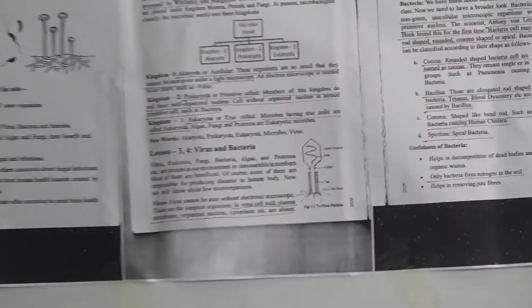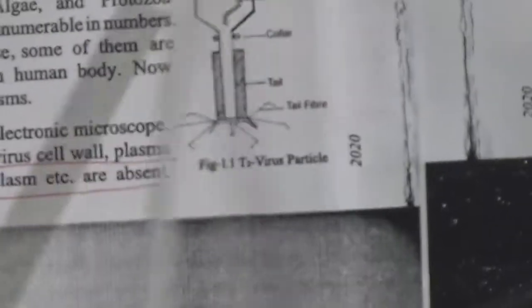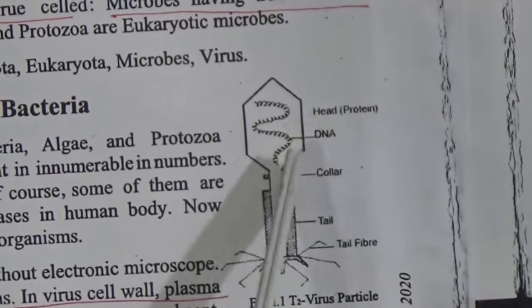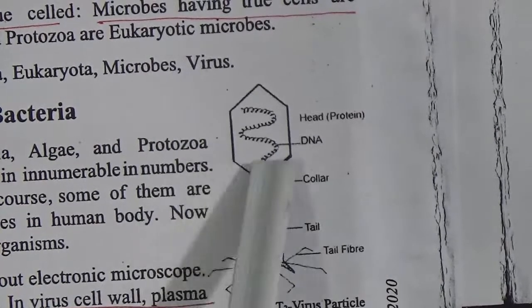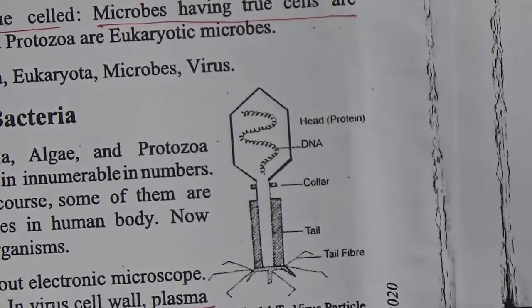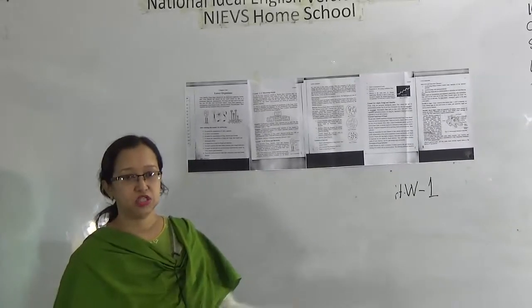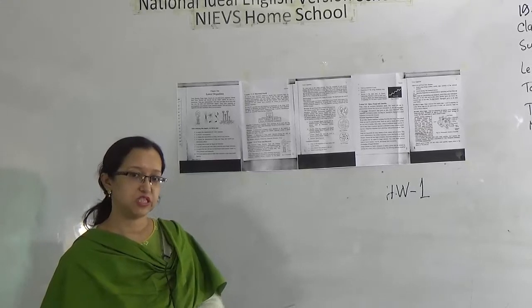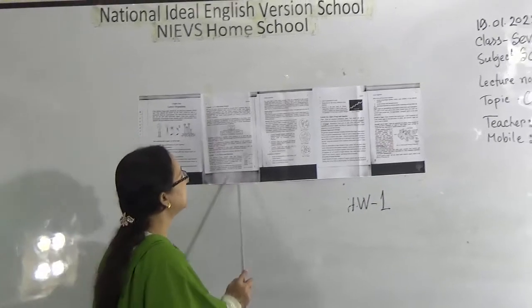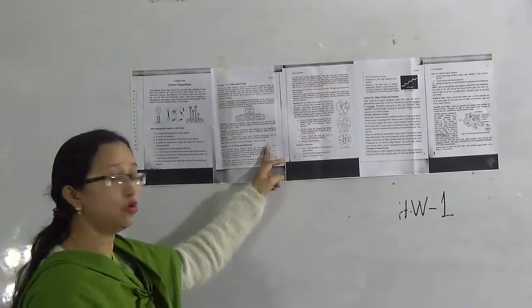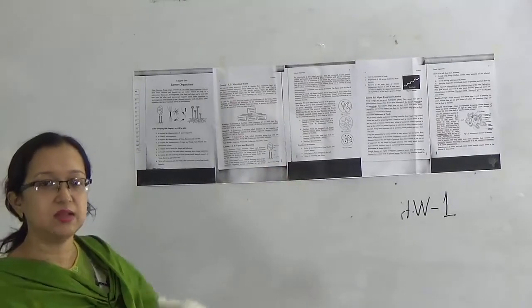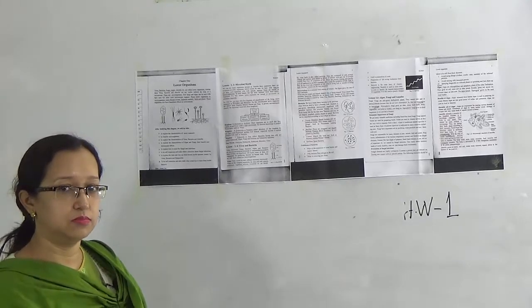In the T2 phage virus, there is a protein coating outside and DNA, collar, tail, and tail fibers inside. When the DNA and protein coating are separated from each other, they lose life. They cannot do harm to other animals, plants, or other things. But when they regain life properties, the DNA prepares protein coating and the protein coating creates DNA inside it — increasing the number of viruses enormously.